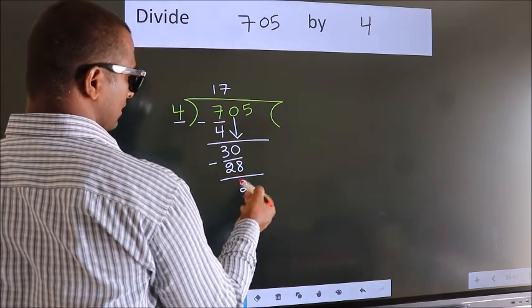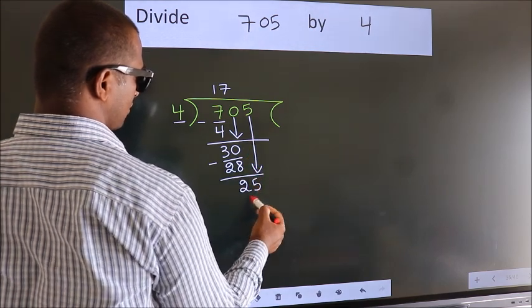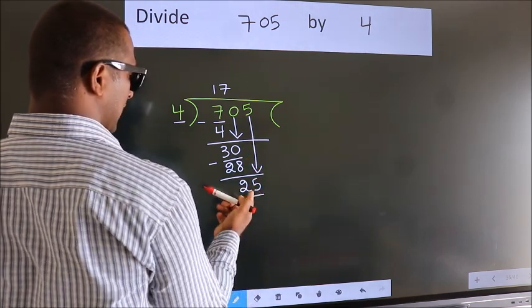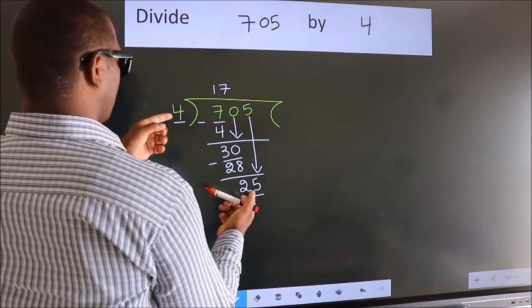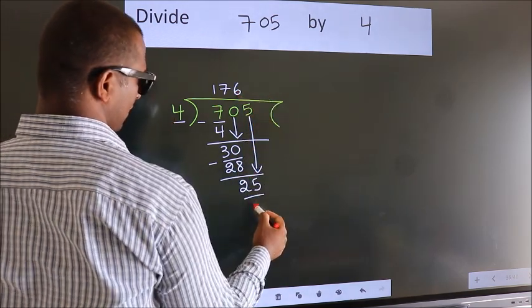After this, bring down the beside number, so 5 down, so 25. A number close to 25 in the 4 table is 4 6 24.